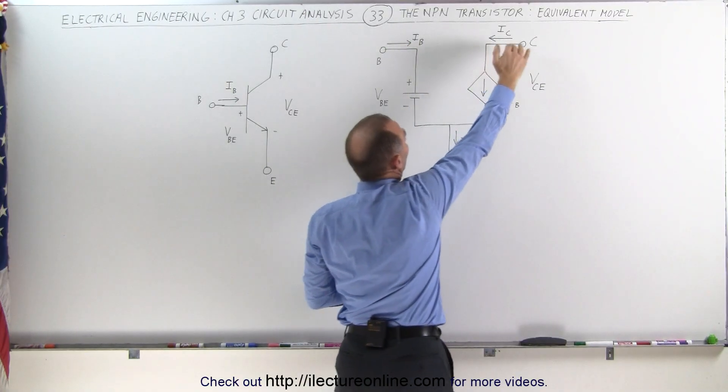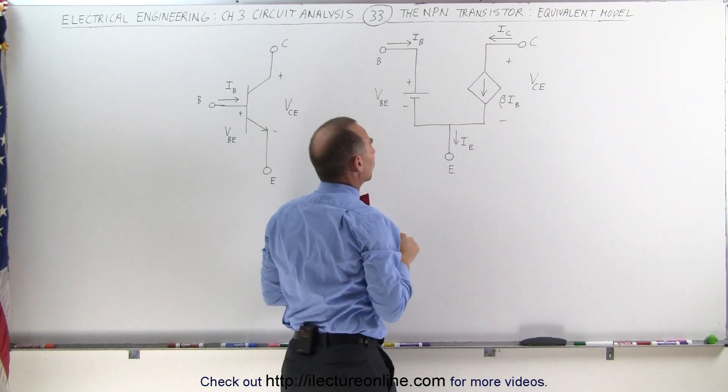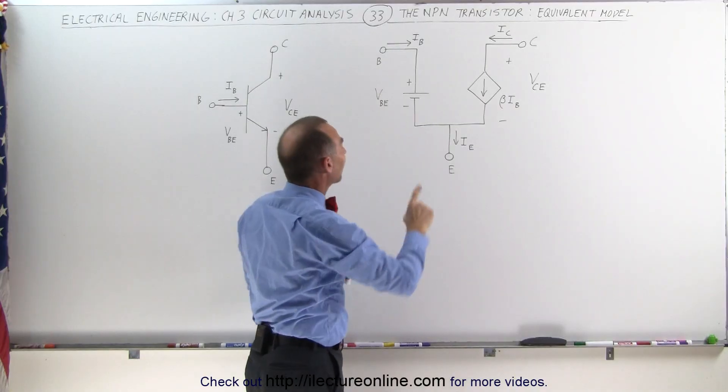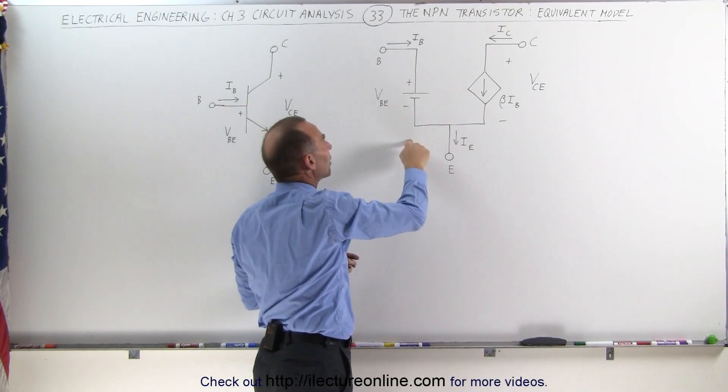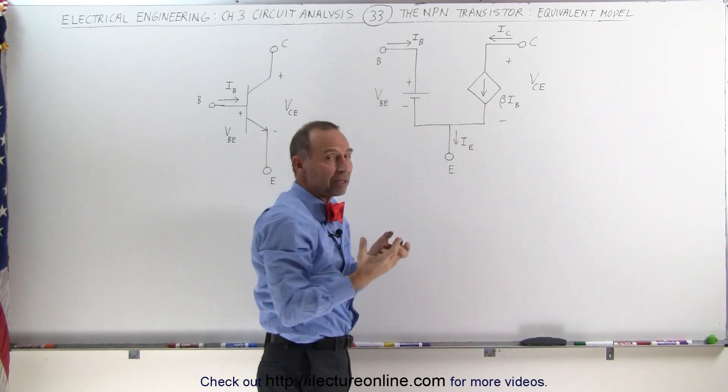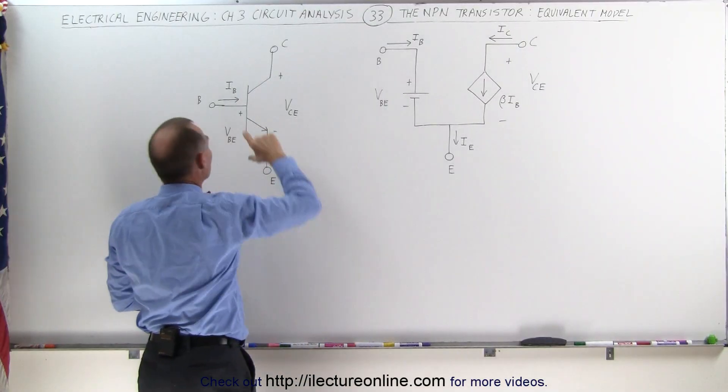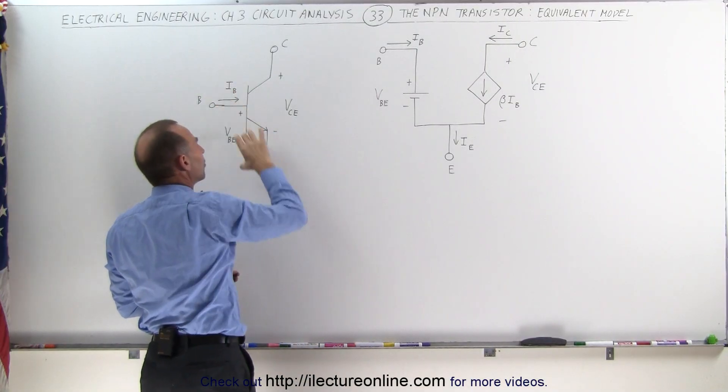We still have a base current, a collector current, and an emitter current, but notice now that we have the voltage from the base to the emitter, which is the 0.7 volt, typically for an NPN transistor, which is the voltage difference from the base to the emitter.